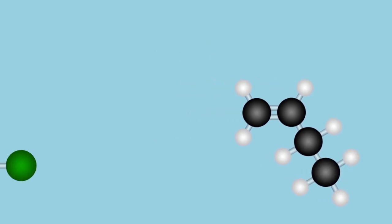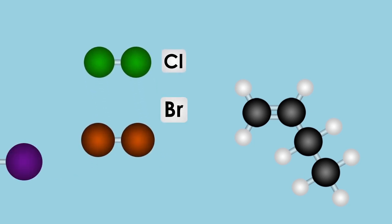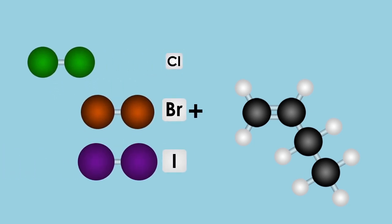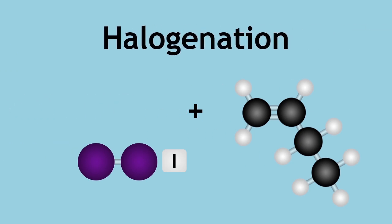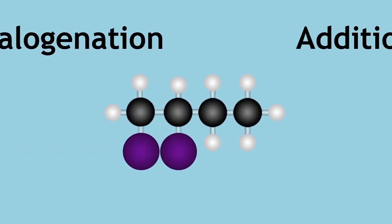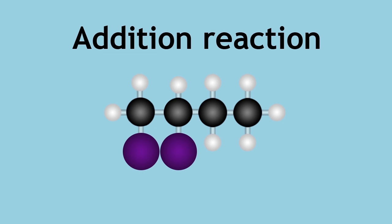When a halogen, such as chlorine, bromine, or iodine, reacts with this carbon-carbon double bond, a halogenation occurs. This is an addition reaction, where the halogen is added across the double bond.